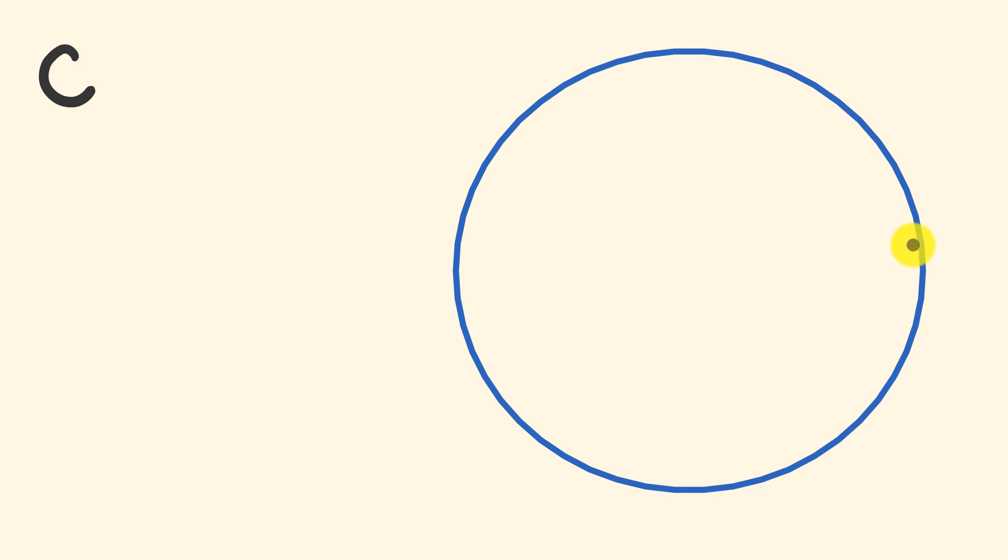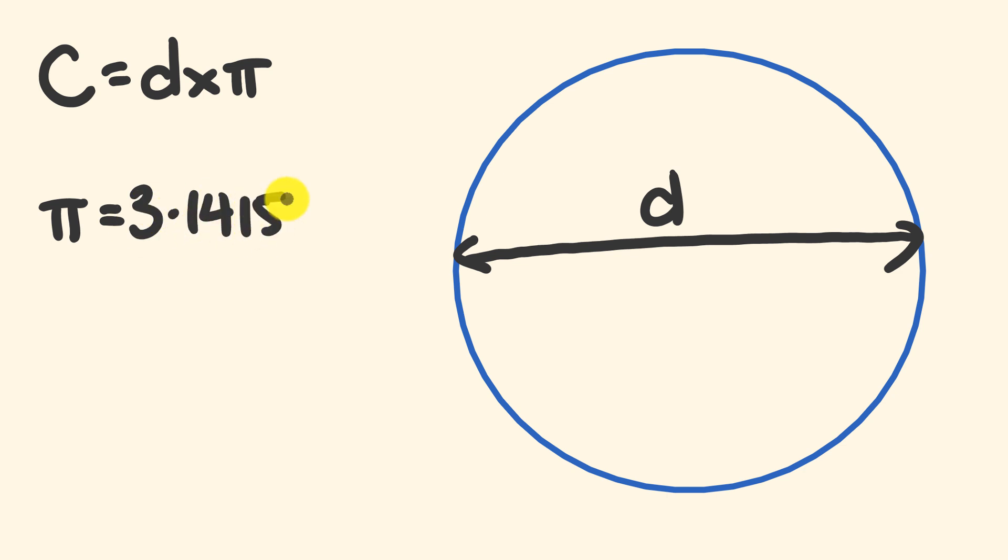Now the circumference is easy to work out. What you do is you measure the distance across the circle, that is the diameter, and the circumference is equal to the diameter multiplied by pi. Pi which is equal to 3.1415, and so on and so forth. That's quite literally what pi is. Pi is a ratio between the diameter and the circumference. You want to know what the distance around the outside of a circle is? Well, multiply the distance across by pi.